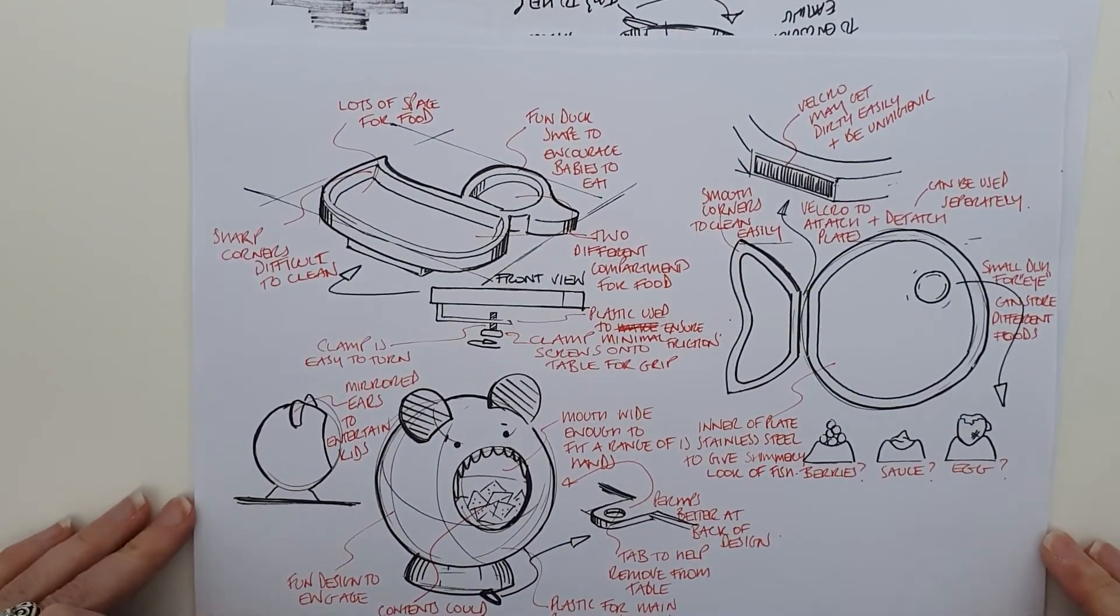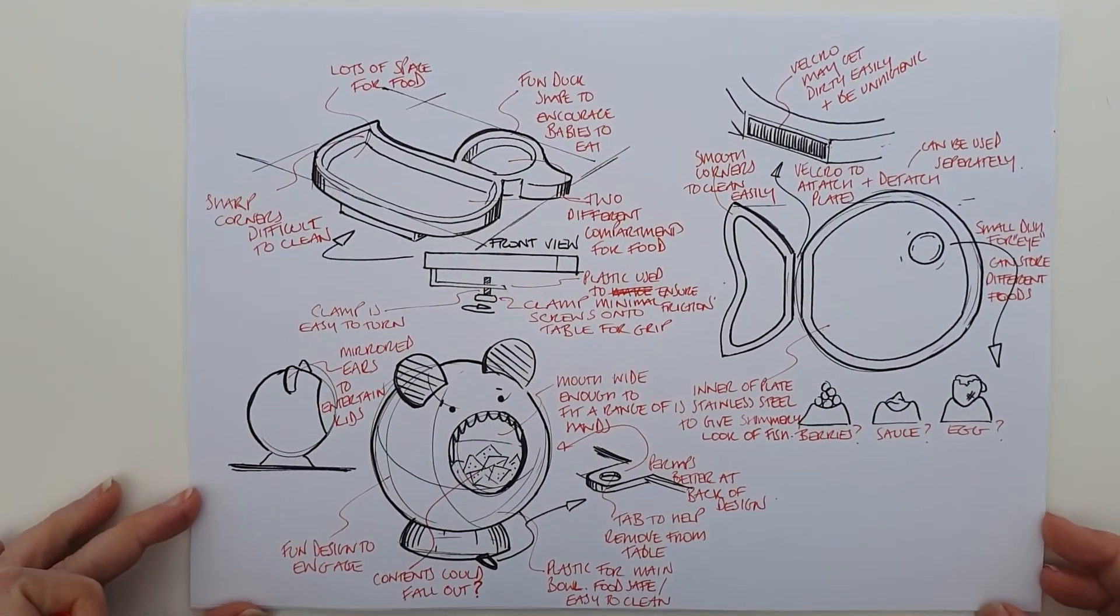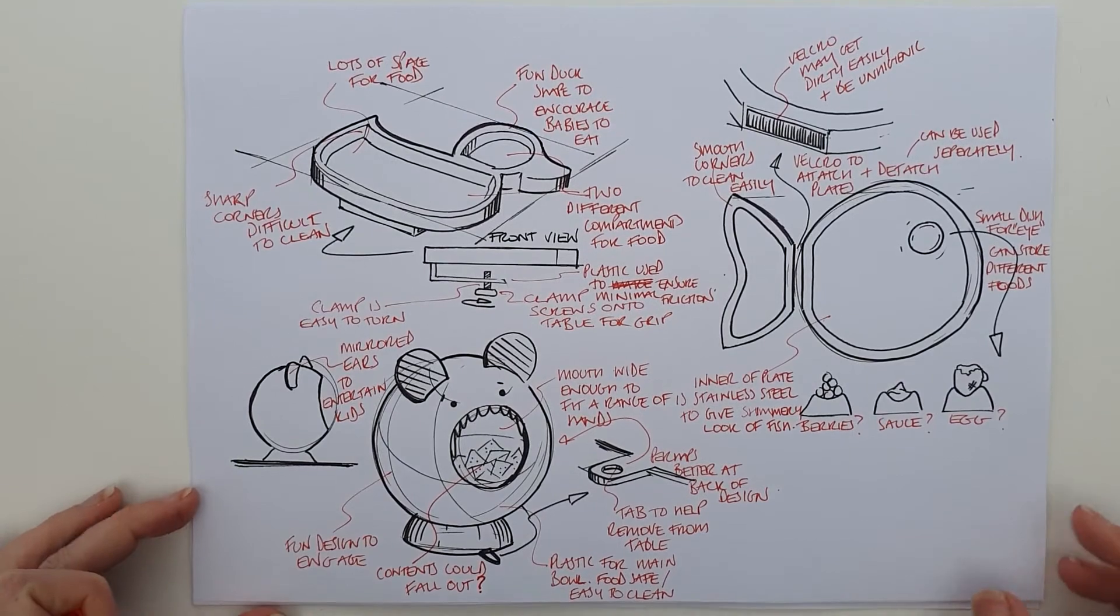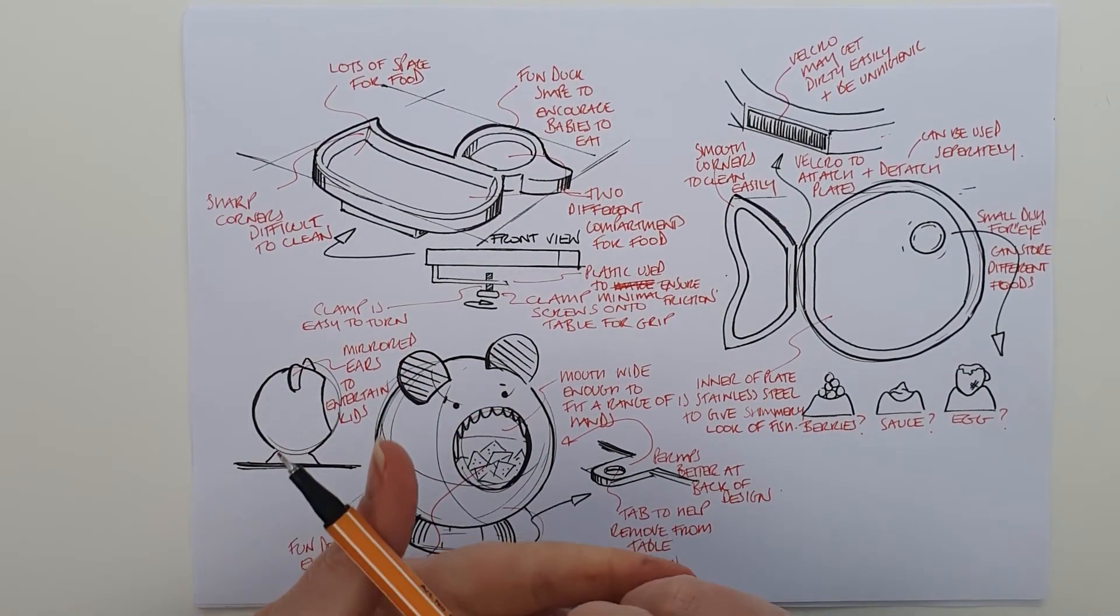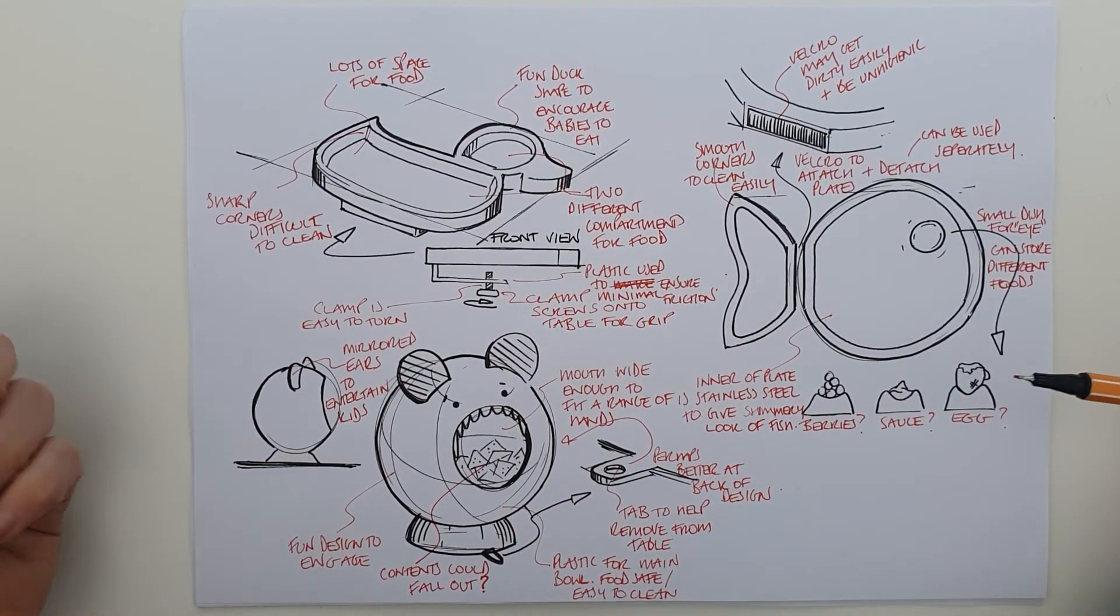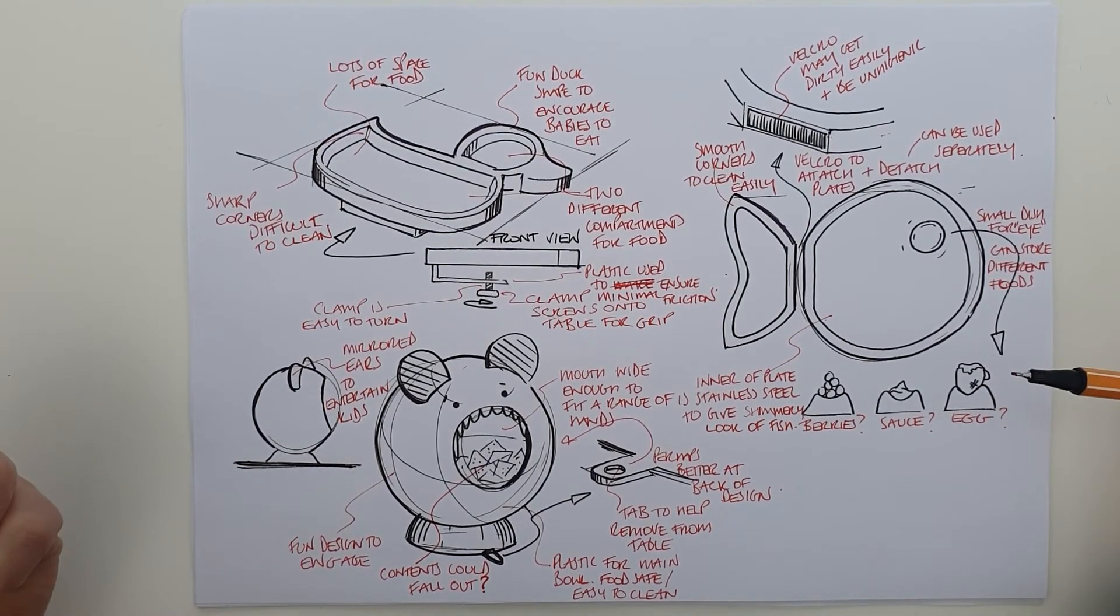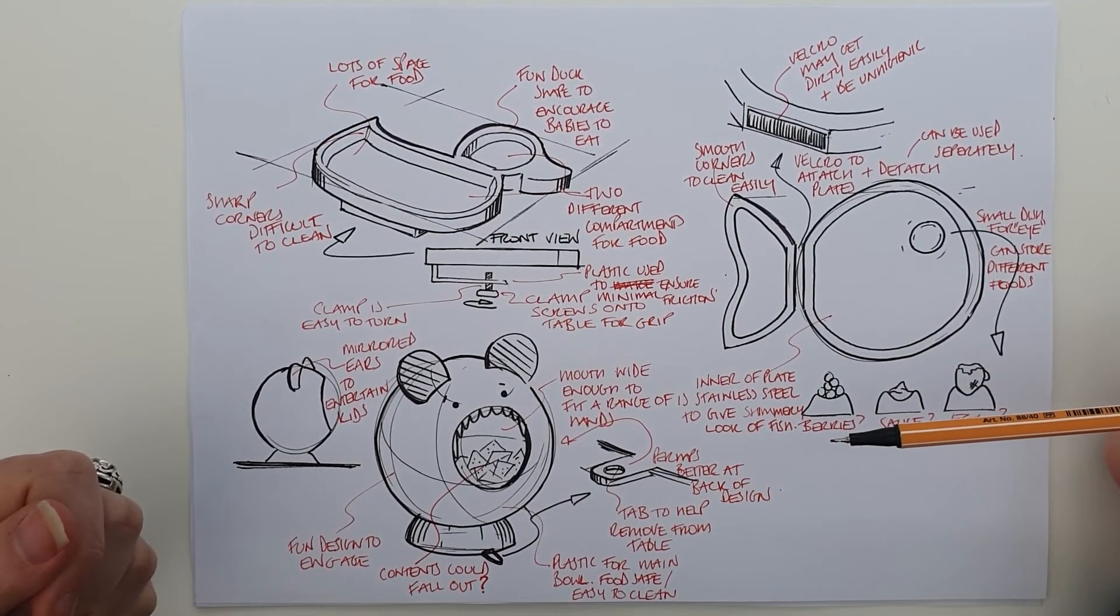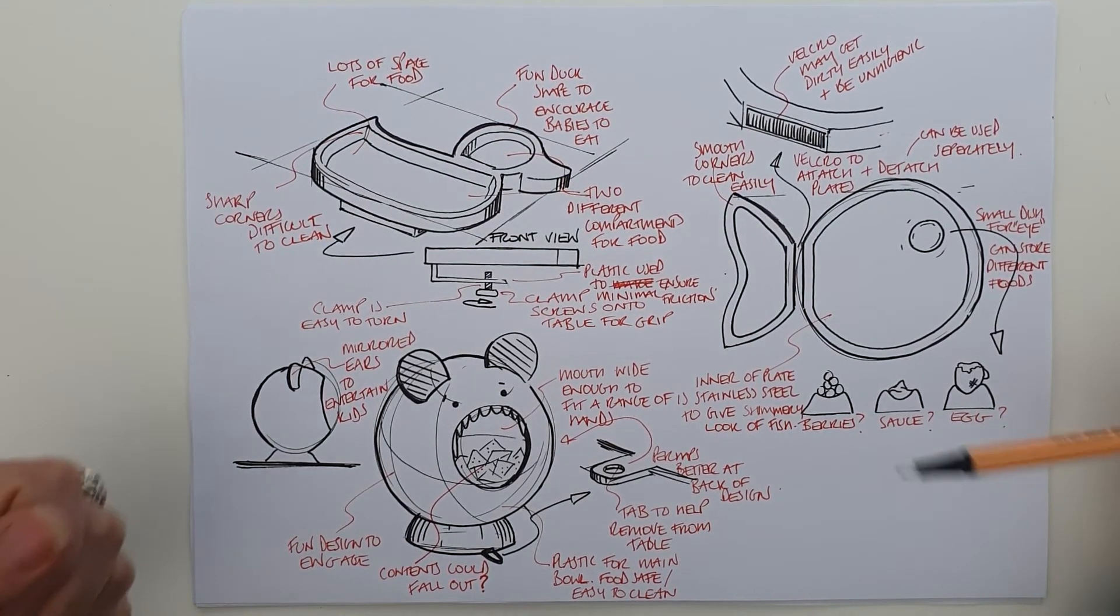So there we have it. Now my designs have come to life because I know exactly what they're all about now. I've commented on function, aesthetics, ergonomics, and materials for all of them. And now if I was to give this sheet of designs to my client for the design challenge, they would have an idea of what my designs were all about and have a deeper understanding. And that's what we want you to do.